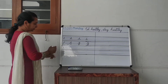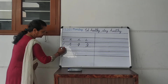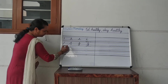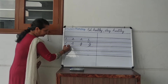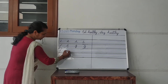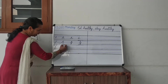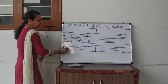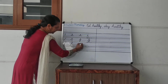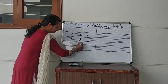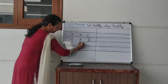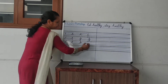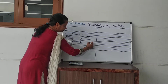Next alphabet is k. Small k starts from the second blue line. Make a curve like a slanting line, like l, then turn and come down till the second blue line. Next step: come down, then curve.